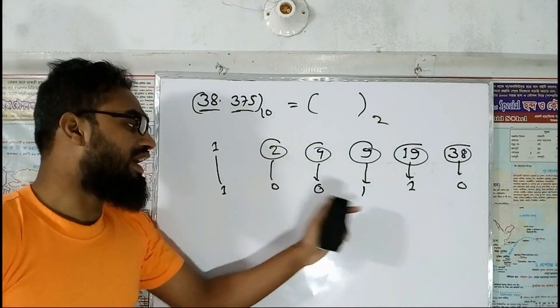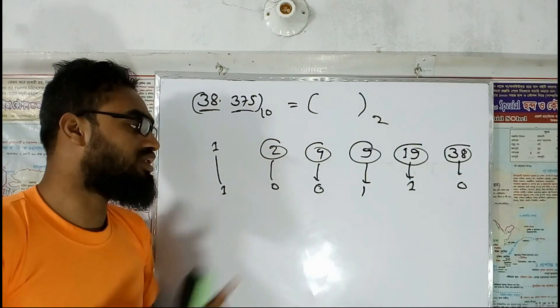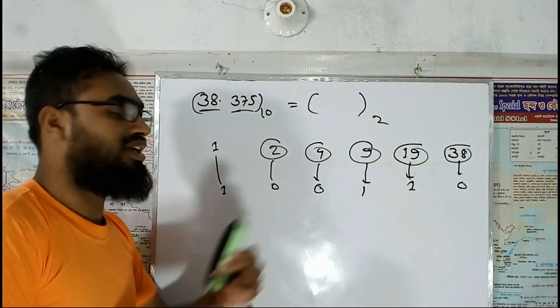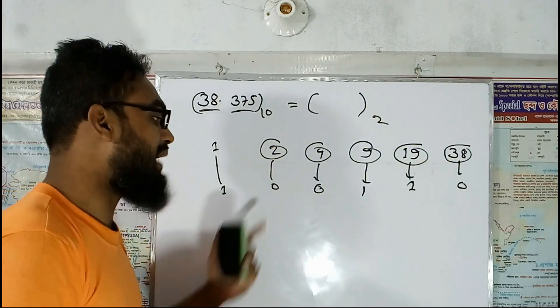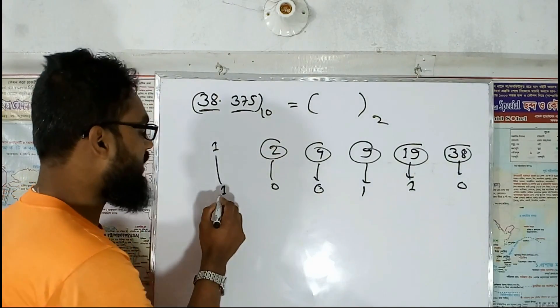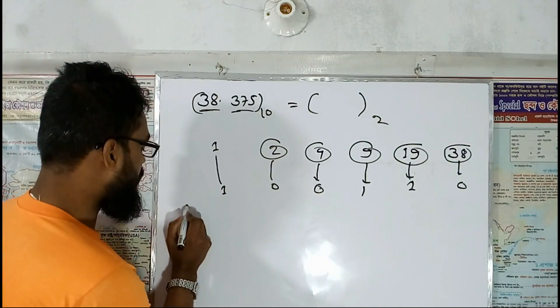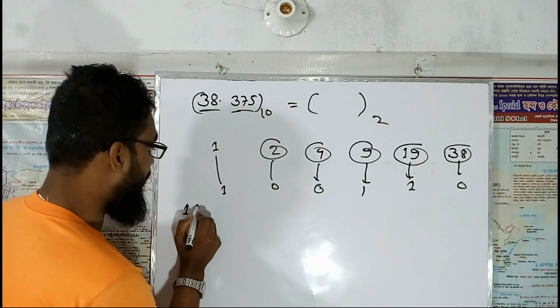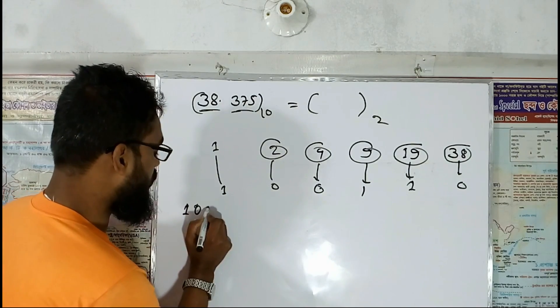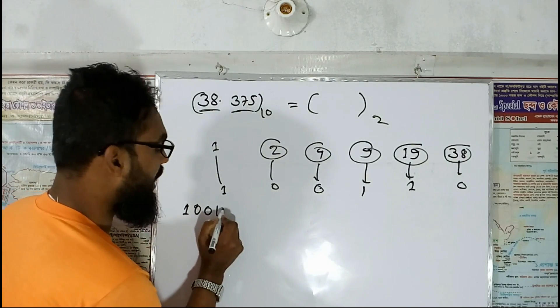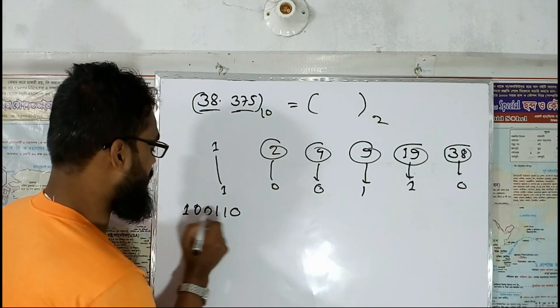These kinds of binary digits we obtain are: 1, 0, 0, 1, 1, 0.